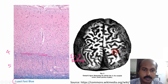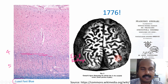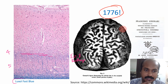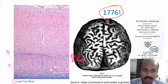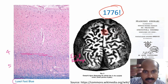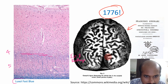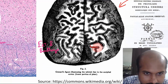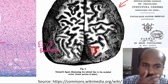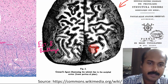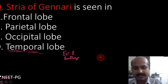This was found by Francesco Gennari in the year 1776 — in the 18th century, even before the laminar pattern of the cerebral cortex was identified. He was actually a medical student. In his paper, in a coronal section of the occipital cortex, you can see his description of a white line — and that white line is the stripe or stria of Gennari.